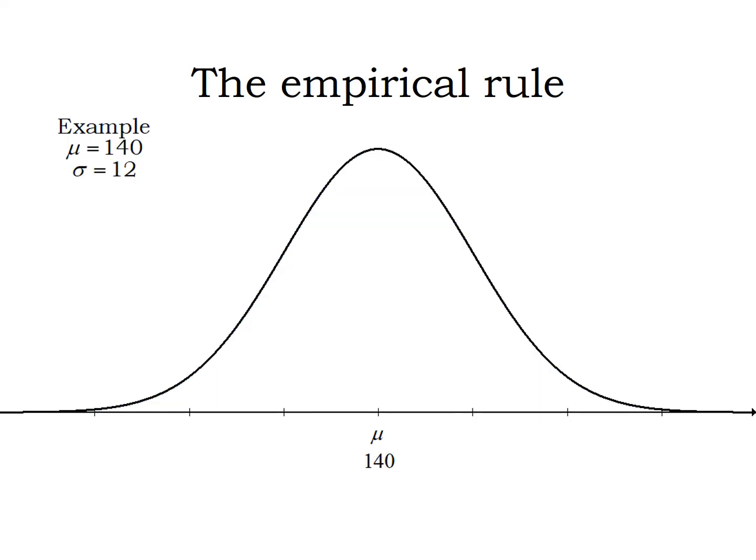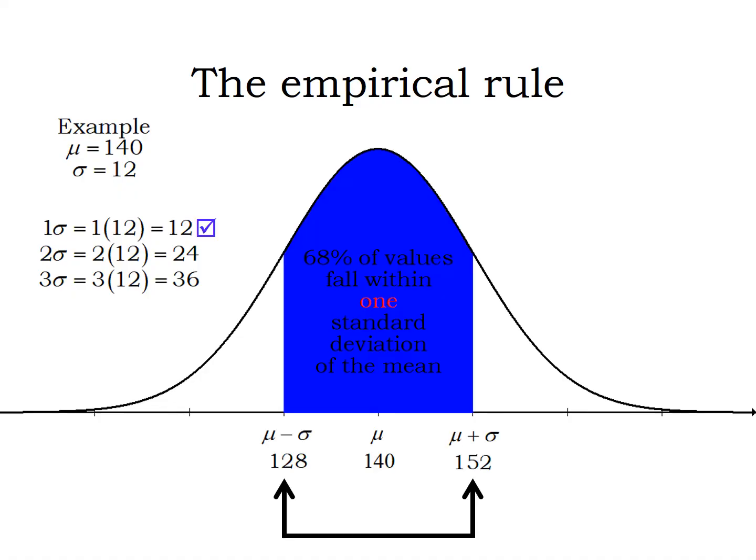Let's look at an example where μ is 140 and σ is 12. The empirical rule is based on one, two, and three standard deviations of the mean, so σ is 12, one σ is going to be 12, two σ is 24, three σ is 36. We go 12 in each direction, so 140 minus 12 and 140 plus 12, we're now at 152 and 128.